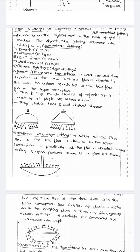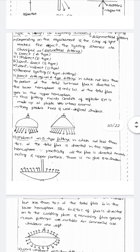The first one is the direct fitting, or A-type fitting lighting scheme. In this type, not less than 90 percent of the total luminous flux is directed in the lower hemisphere.